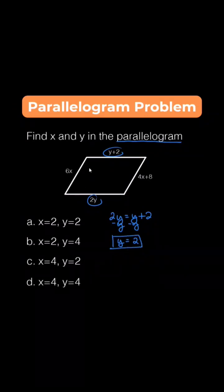Now, solving for x, since these two are also opposite sides, we know that 6x and 4x plus 8 are congruent. So we have 6x equals 4x plus 8, subtract 4x both sides and we obtain 2x equals 8.